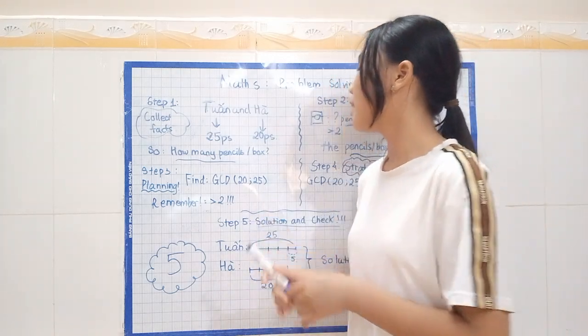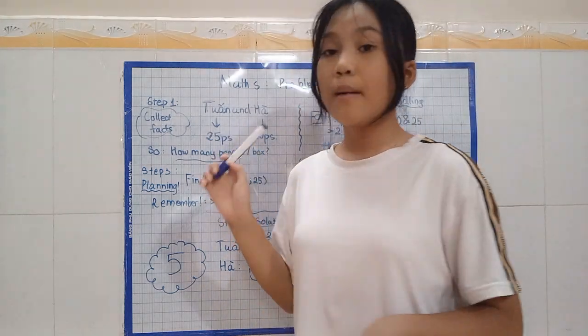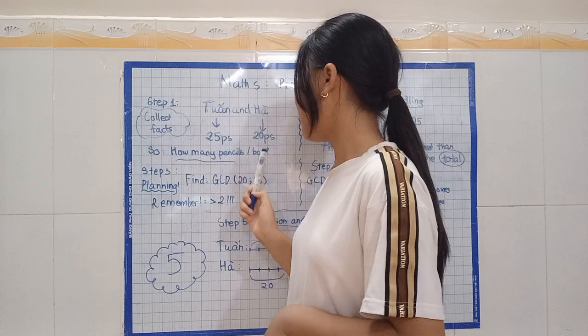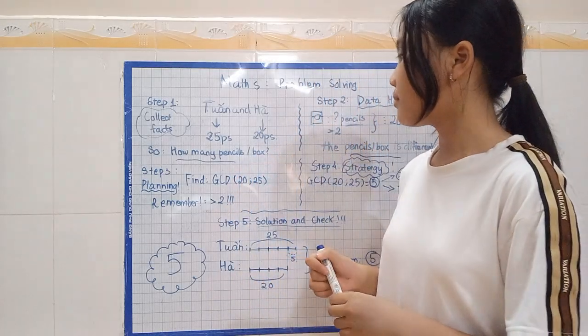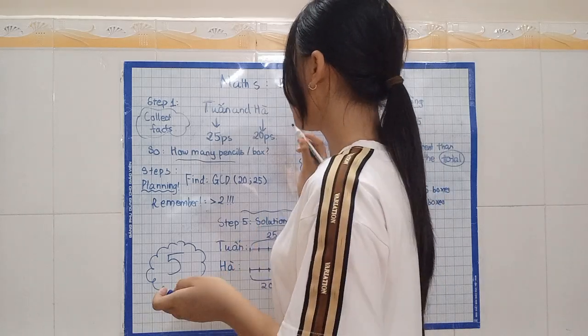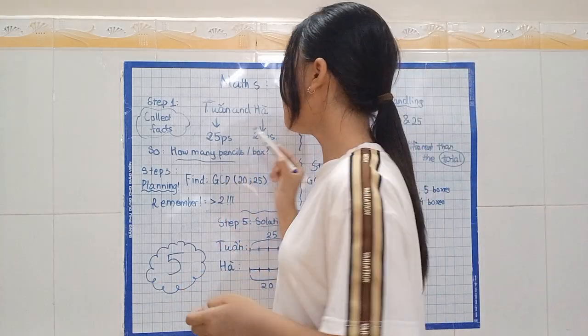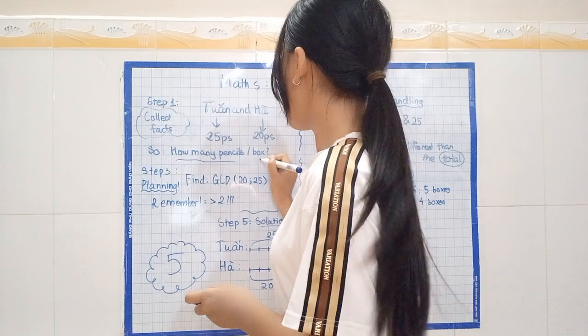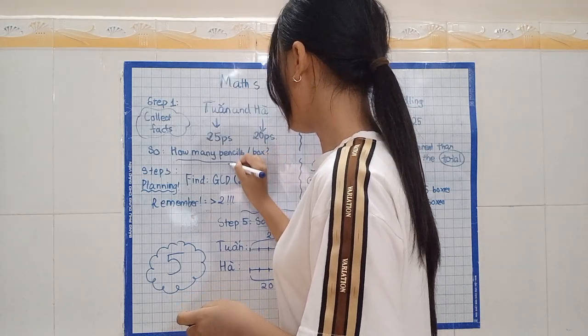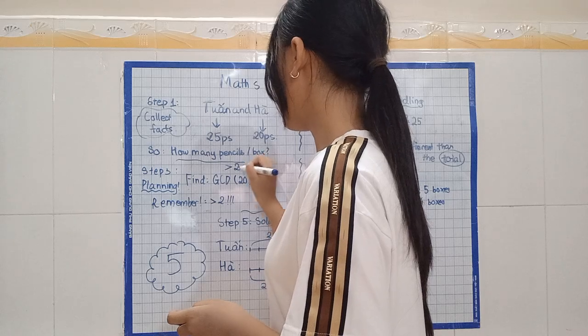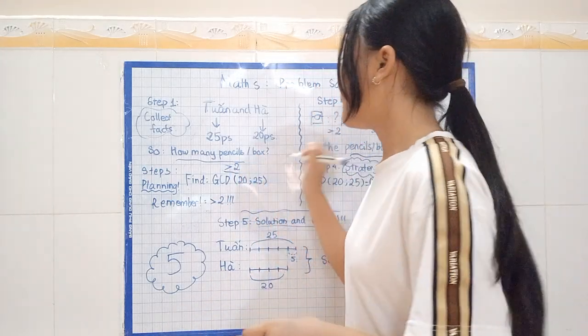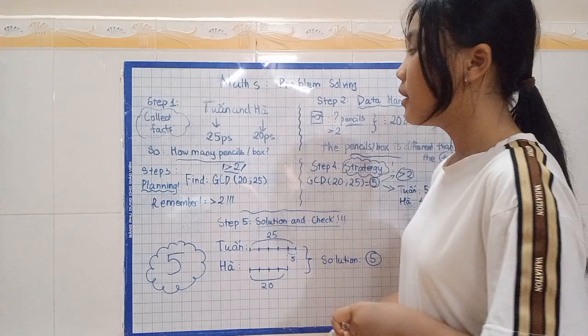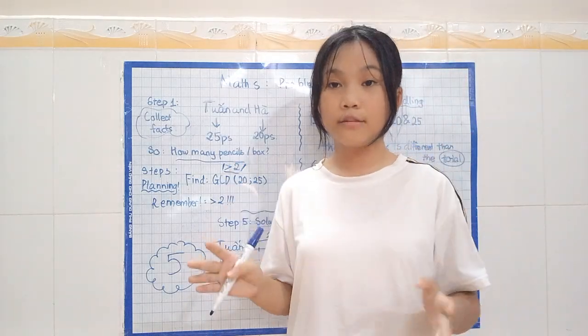What is our problem here? Our problem here is, Tung bought a total amount of 25 pencils, and Han bought an amount of 20 pencils. We need to know that our problem here is, how many pencils per box are there.